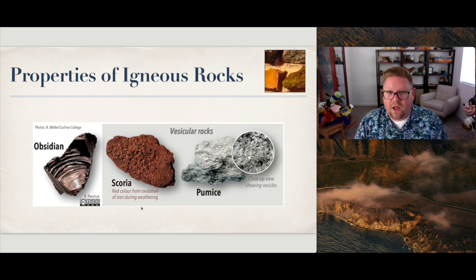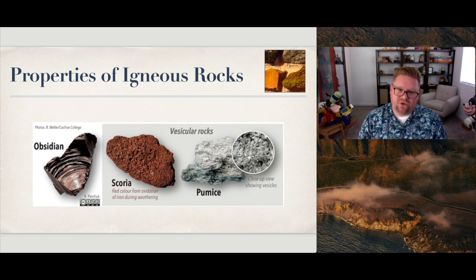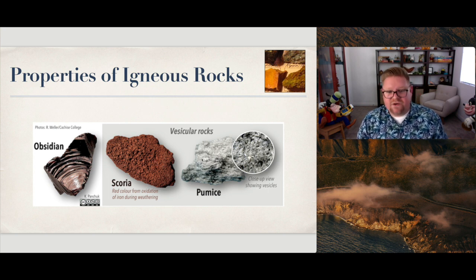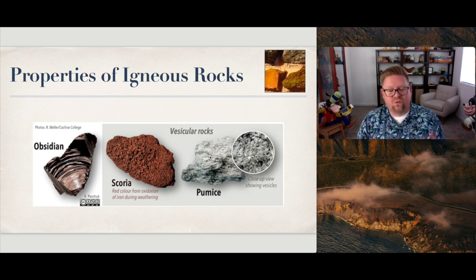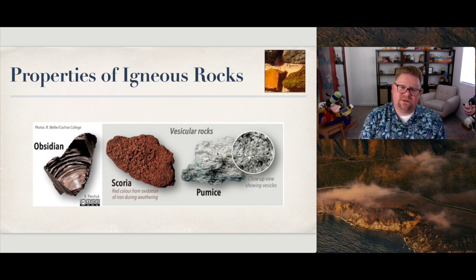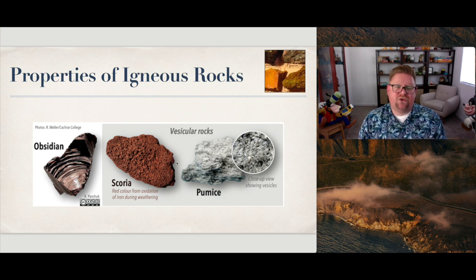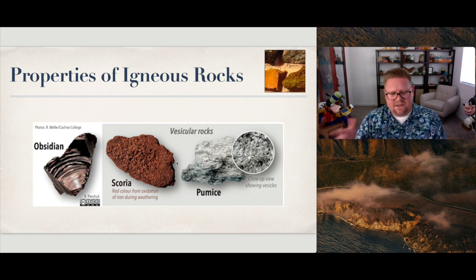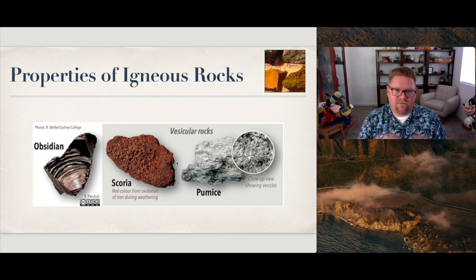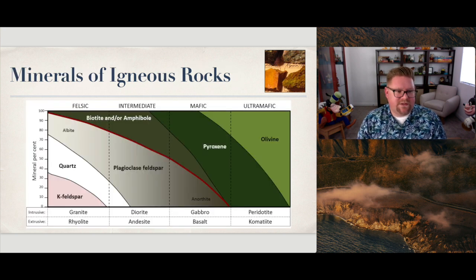Here we have scoria, which is darker red because it's been oxidized due to weathering, and it has those vesicles. Then here's a piece of pumice, which is unique because it's also vesicular — it floats on water, it's really lightweight, and it's volcanic glass, meaning it forms very rapidly just like obsidian. The difference is that pumice had trapped gases within it, possibly including water that instantly turned to vapor when heated, creating those trapped air bubbles.